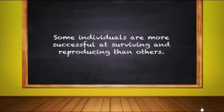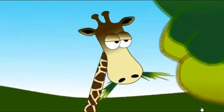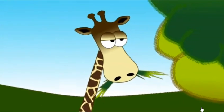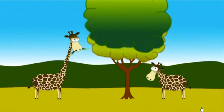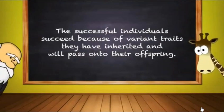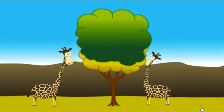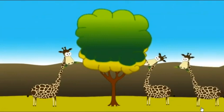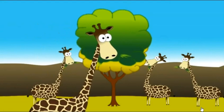Condition number three: some individuals are more successful at surviving and reproducing than others. In the case of our giraffes, the long-necked individual did not acquire its neck by stretching to grab leaves. Instead, individuals within the population were born with a neck length that was longer than others. Because a longer neck allowed them to reach food that was otherwise unattainable, it gave them an advantage. Condition number four: the successful individuals succeed because of variant traits they have inherited and will pass on to their offspring. Giraffes with the longer neck advantage are in better health and able to pass this feature to their offspring. Over time, this process can result in populations that specialize for particular environments and may eventually result in the emergence of new species.